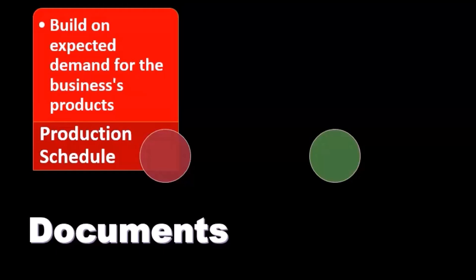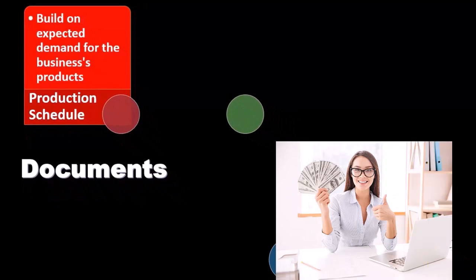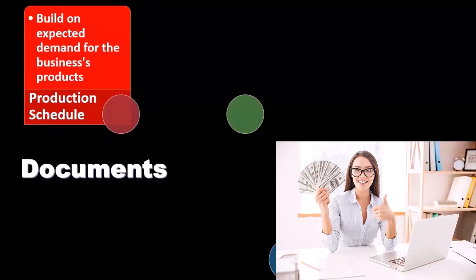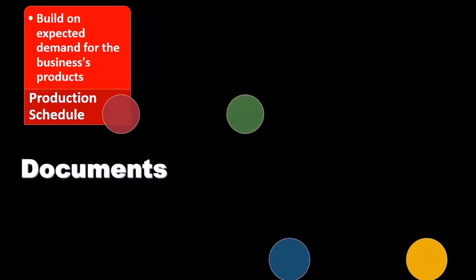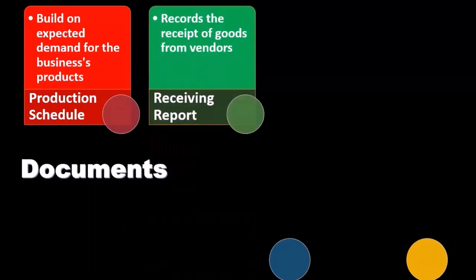We want to build an expected demand for the business's products. If we have a normal expected demand, we can have more assurance about the inventory process and the production schedule. If the demand is a lot more volatile, then we have more risk involved in terms of the production.